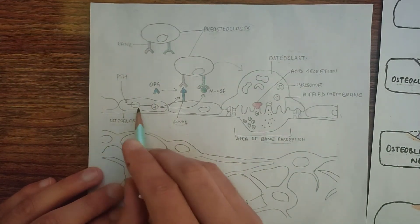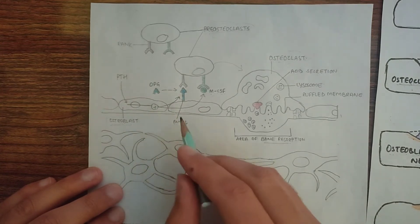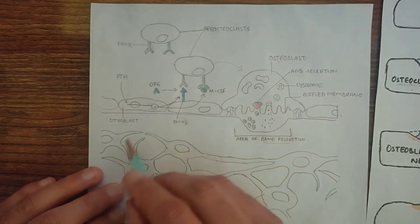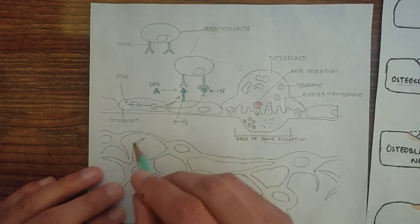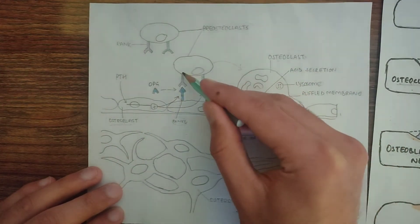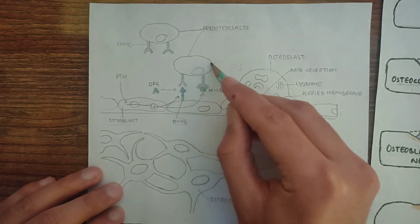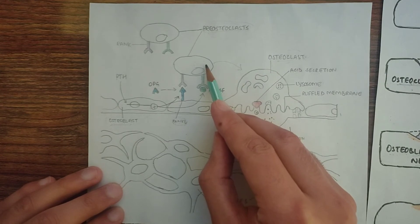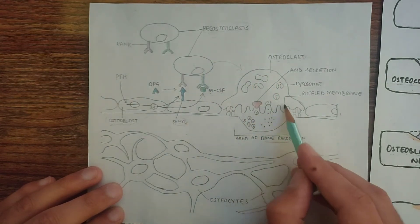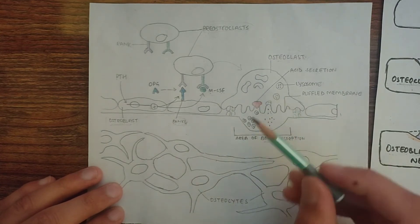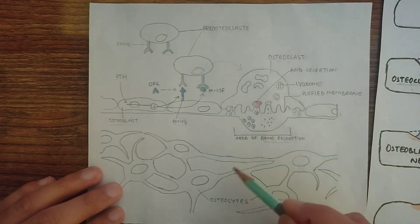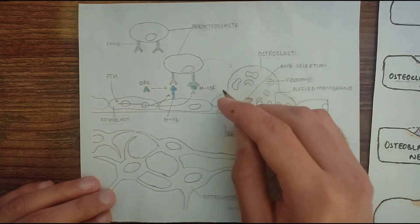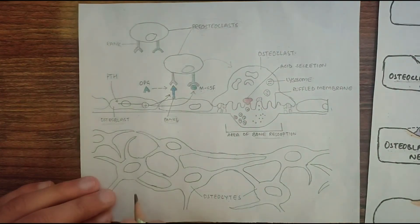So, to summarize: parathyroid hormone will bind to the osteoblast cell, and then the osteoblast cell will form the osteoblast protein RANKL and will also release macrophage colony-stimulating factor. These two osteoblast proteins will bind to their receptors located on the pre-osteoclast cell. As this binding takes place, the pre-osteoclast cell will differentiate into a mature osteoclast cell, which then causes the release of enzymes and acid secretion, promoting bone resorption.